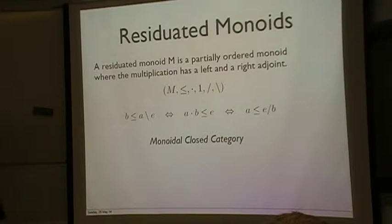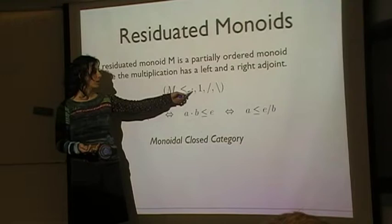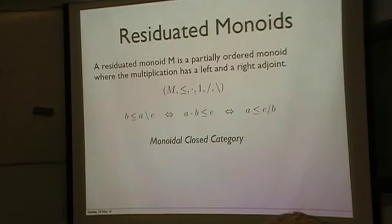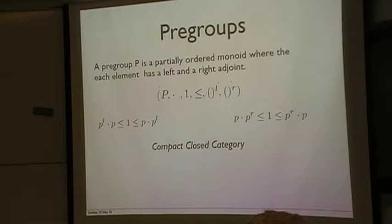And that these guys are adjoints to the multiplication means that we've got this property there. In fantasy terms, these are partial ordered versions of monoidal, maybe I should say biclose categories because this would be the tensor of the category which is not necessarily commutative. So that's why we have a left and a right implication.